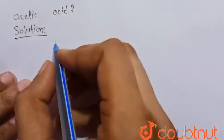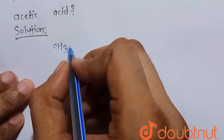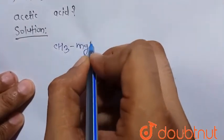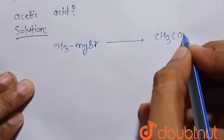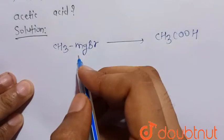We have to synthesize acetic acid from methyl magnesium bromide, CH3MgBr. This is the Grignard reagent.